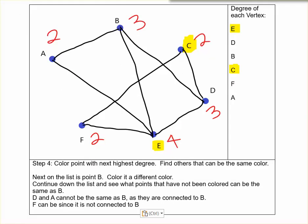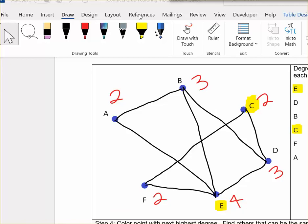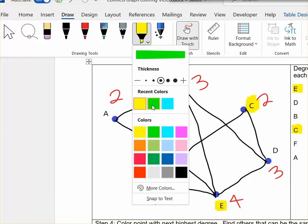Once I know that no other points can be yellow I'm going to move on to a different color. So again in the draw menu I'm going to do the highlighter. Use this little drop down and that's going to allow me to pick a different color. Doesn't matter at all what you pick.